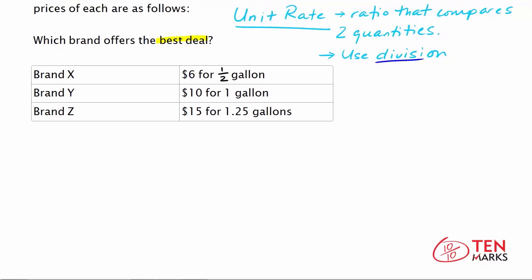To find the unit rate, we're going to divide the cost by the number of gallons you get for that dollar amount. X is $6 divided by half a gallon. And what you get here is 12. So this means $12 per gallon.